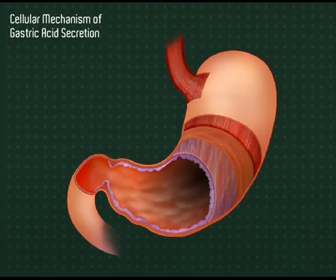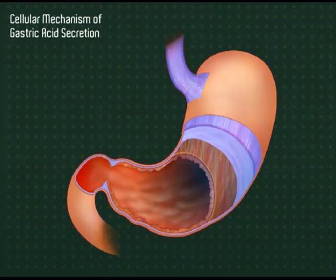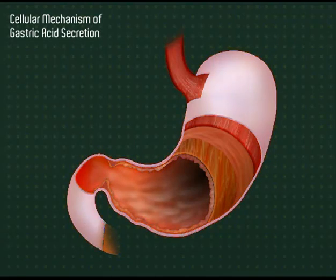The wall of the stomach consists of four layers: the mucosa, the submucosa, the muscularis externa, and the outermost serosa.